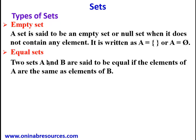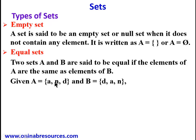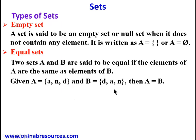Now we look at equal sets. Two sets A and B are said to be equal if the elements of A are the same as the elements of B. For example, A = {a, n, d} and B = {d, a, n}. There is 'a' in both, 'n' in both, 'd' in both — therefore A is equal to B, so A and B are equal sets. If there were any element in one not found in the other, then A would not equal B.